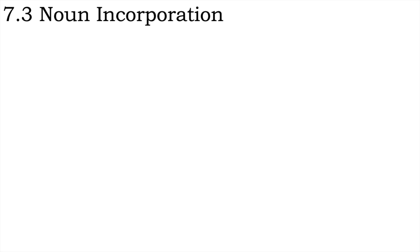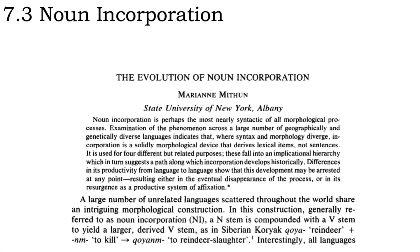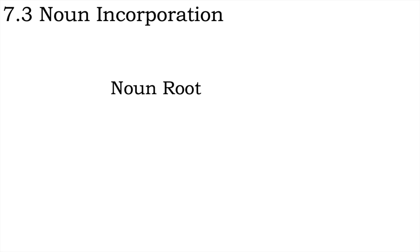Noun incorporation. Marianne Mithun, in the same article proposing a typology of noun incorporation, discusses pathways by which the process of noun incorporation can develop. At its most basic level, noun incorporation is simply a compound composed of a noun root plus a verb root, and thus the development of noun incorporation is, in many ways, as simple as a language coming to permit noun-verb compounds as a productive process. I'll note here a few ways in which some of the other common characteristics of noun incorporation can develop, and some examples of languages at various stages of developing productive noun incorporation.